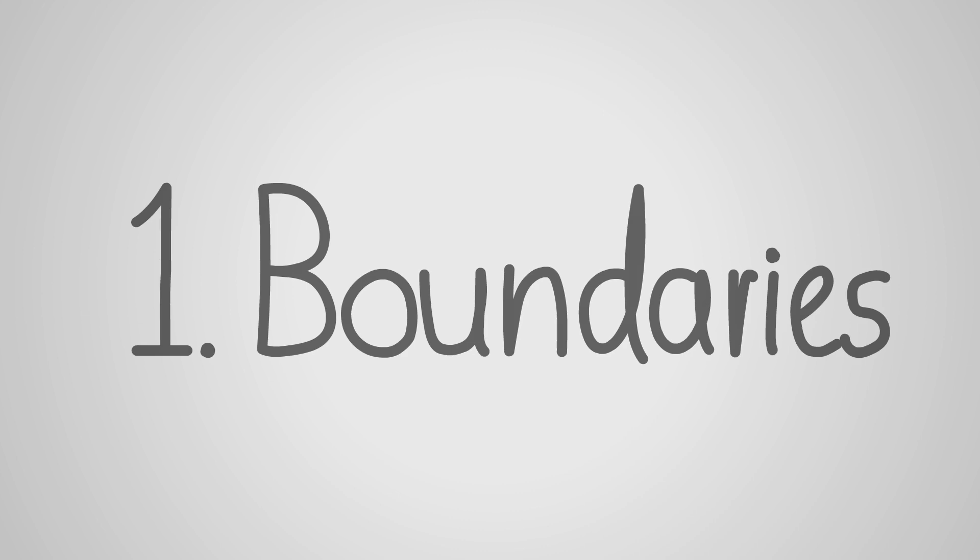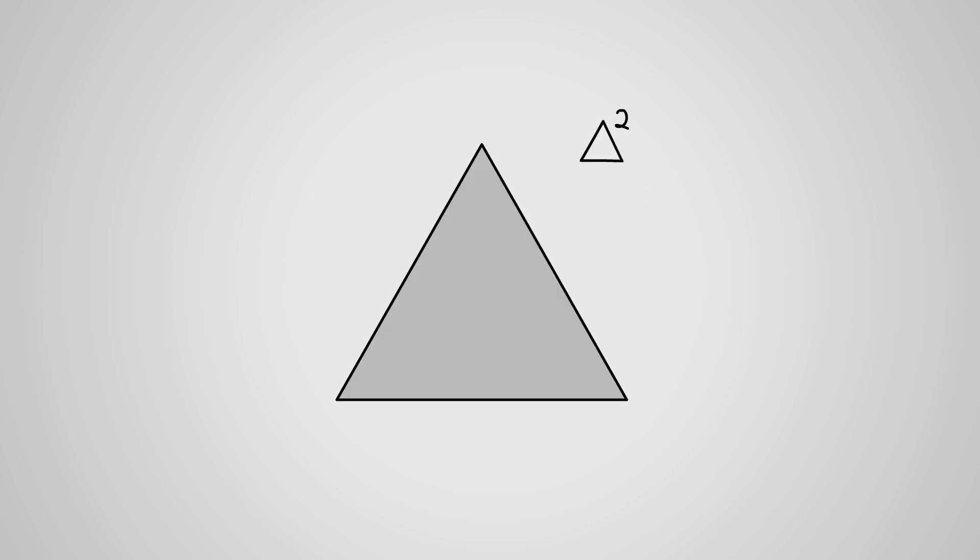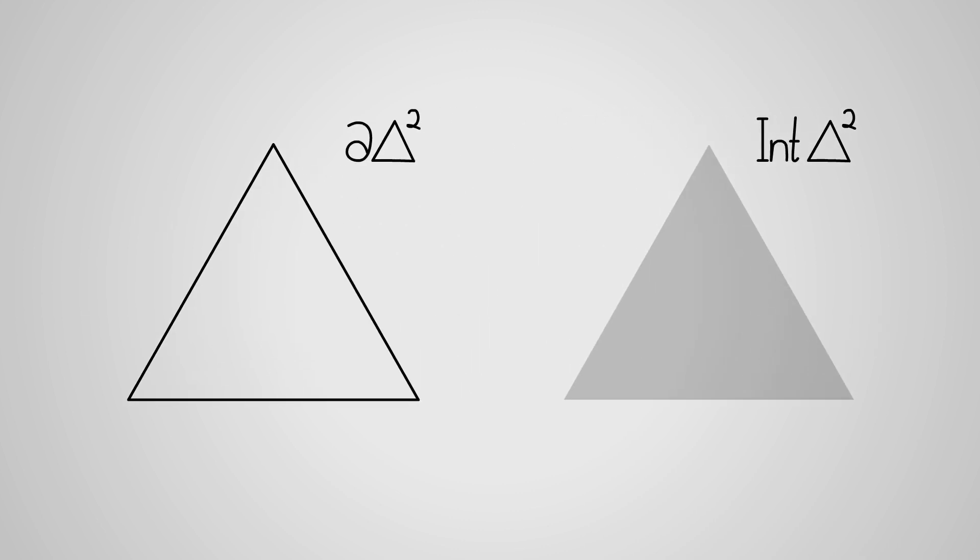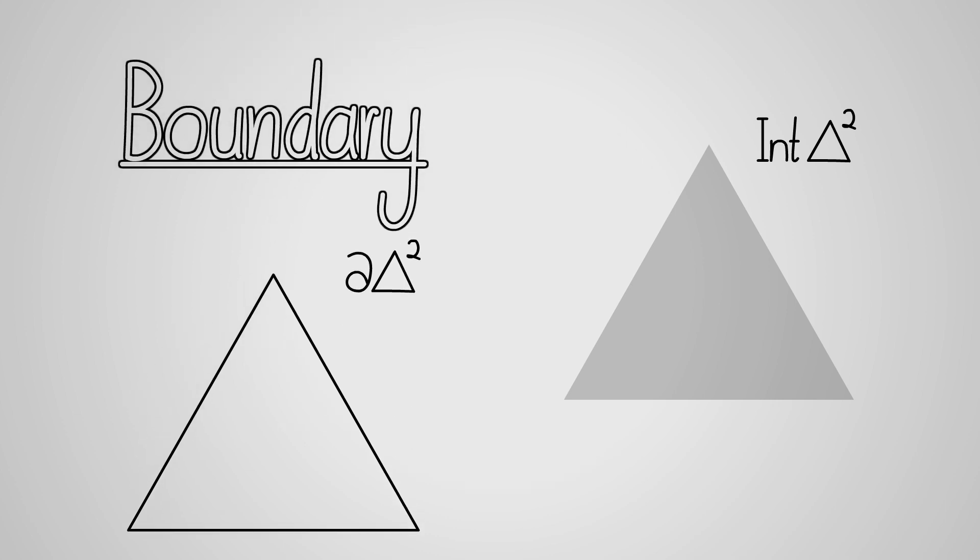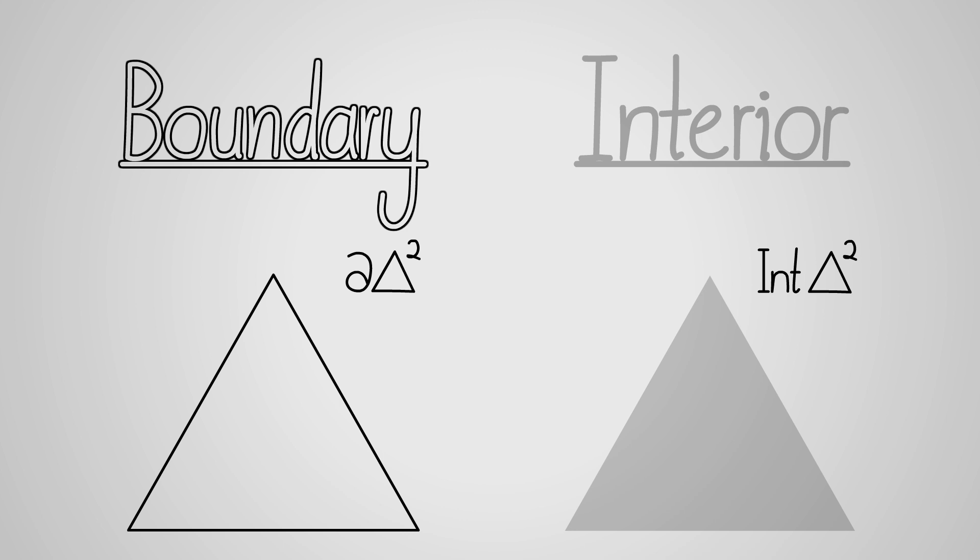If we look at a simplex, we can see that it has two parts. It has an outside shell, called the boundary, and a soft fleshy innard, the so-called interior, which is what's left when the boundary is removed.